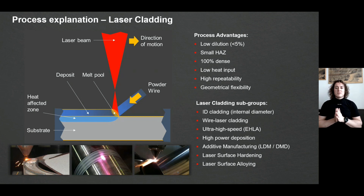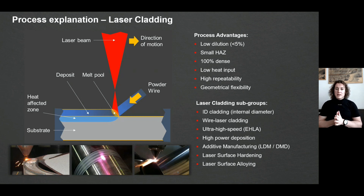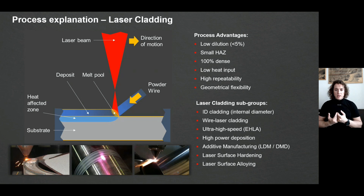The third advantage is that we have 100% dense coatings — we talk about metallurgical bonding. The coatings will not have any spallation problems or adhesion problems. They have very nice properties and a defined microstructure thanks to rapid cooling. So with thinner layers by laser cladding you can get better coating properties compared to any other hard-facing technology.